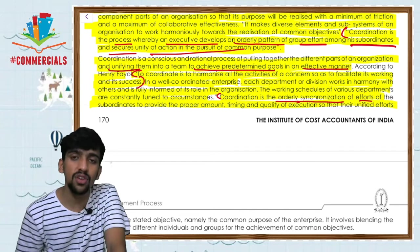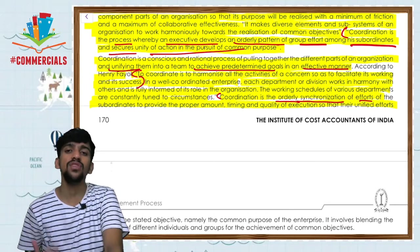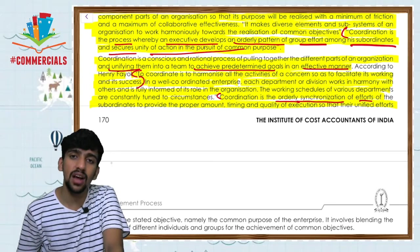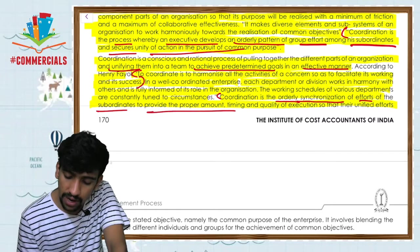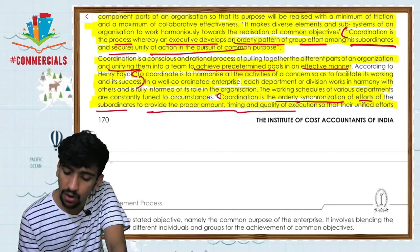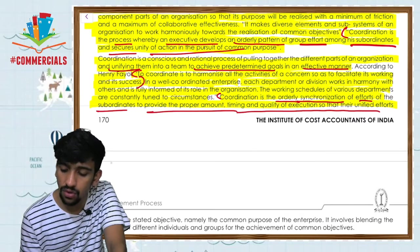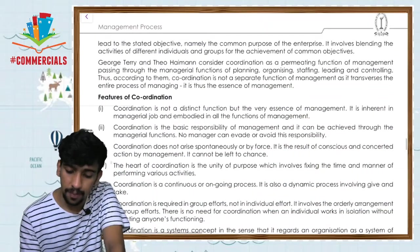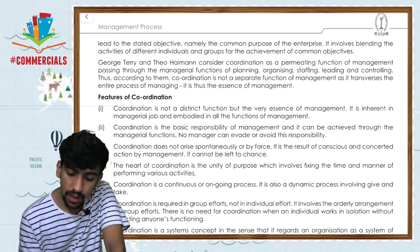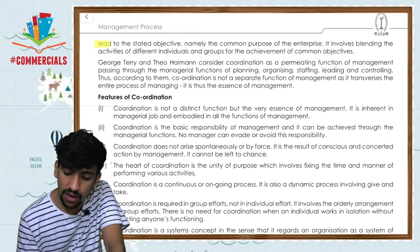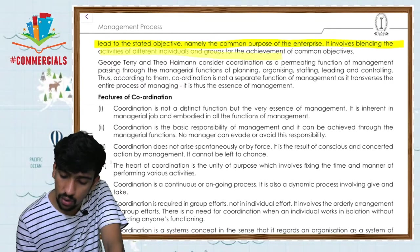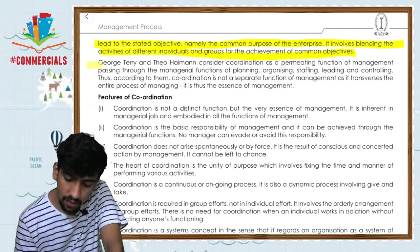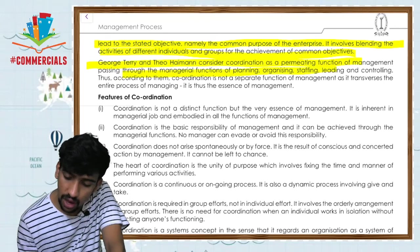Coordination involves synchronization of efforts of subordinates to provide the proper amount, timing, and quality of execution so that unified effort leads to the stated objective — namely the common purpose of the individual, the blending of the group, and the achievement of organizational goals. This is the definition of coordination.